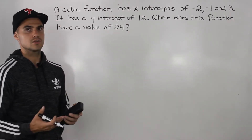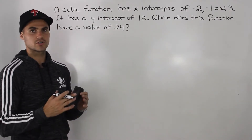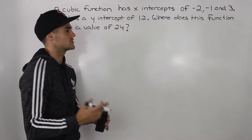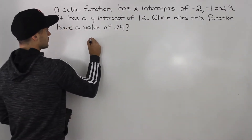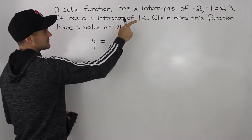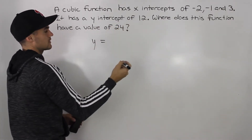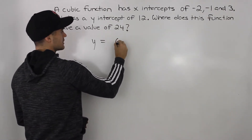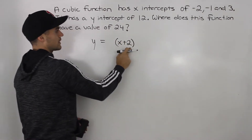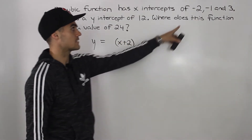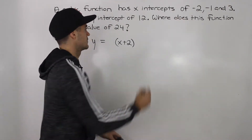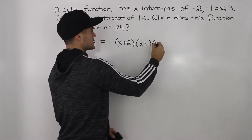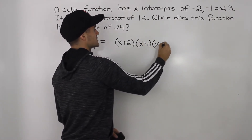The first thing you want to do is create an equation for this cubic function. Notice how we're given enough information to do so. We're told the cubic function has x-intercepts of negative 2, negative 1, and 3. So in factor form, this function is going to be (x + 2), representing the x-intercept of negative 2. An x-intercept of negative 1 gives a factor (x + 1), and an x-intercept of 3 gives a factor (x − 3).